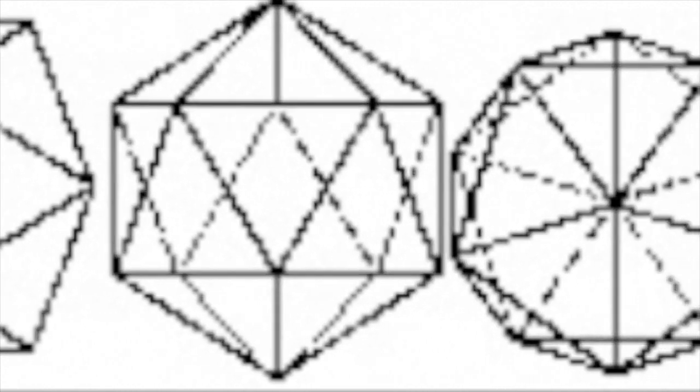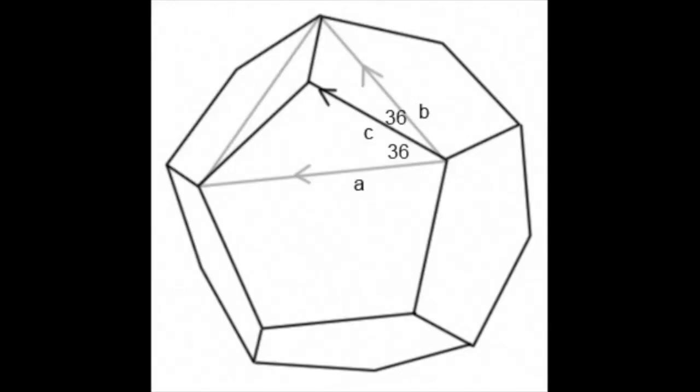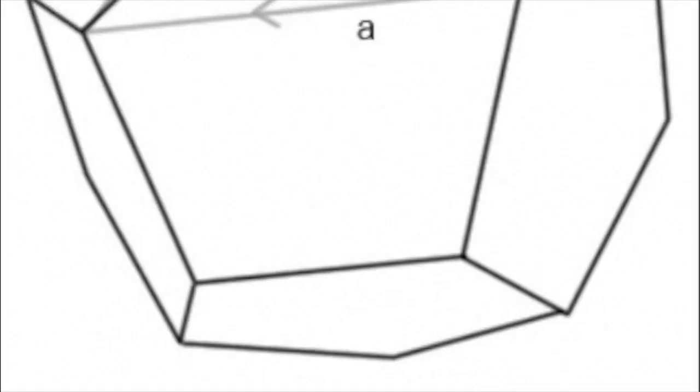In three dimensions, the ideal forms are the regular polyhedra: the tetrahedron, or simplex, of four triangles; the octahedron, or orthoplex, of eight triangles; the cube, or hexahedron, of six squares; the isosahedron, of twenty triangles; and the dodecahedron, of twelve pentagons.